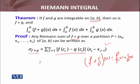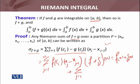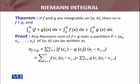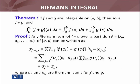Now, the summation can be separated. It becomes the sum from j equals 1 to n of f(c_j) times (x_j minus x_{j-1}), plus the sum from j equals 1 to n of g(c_j) times (x_j minus x_{j-1}). So the Riemann sum of f plus g equals the Riemann sum of f plus the Riemann sum of g, where sigma_f and sigma_g are Riemann sums of f and g respectively.